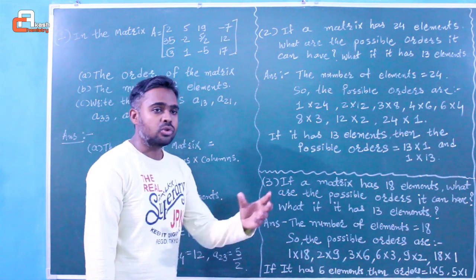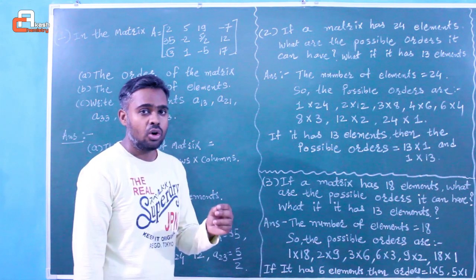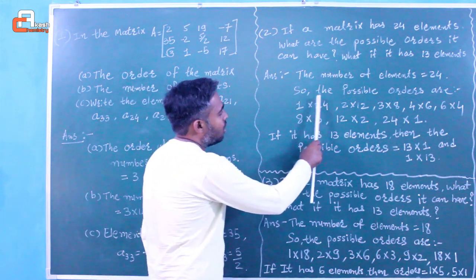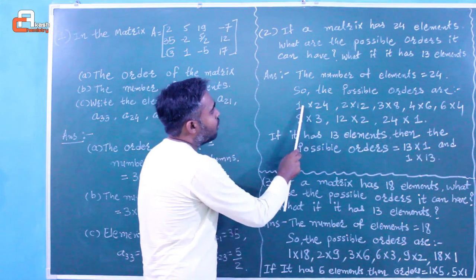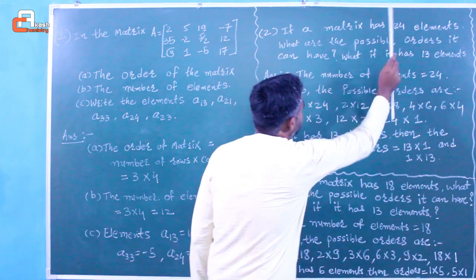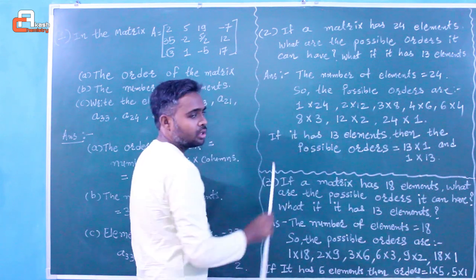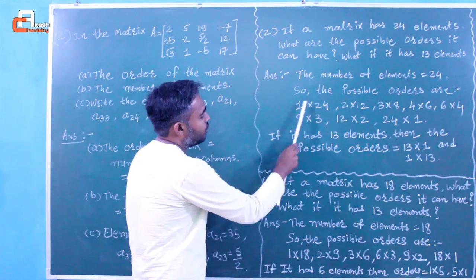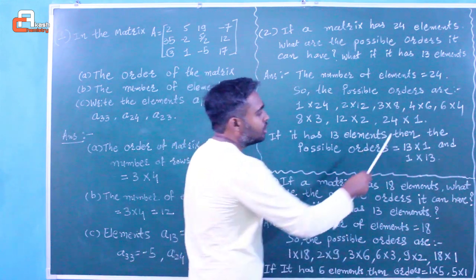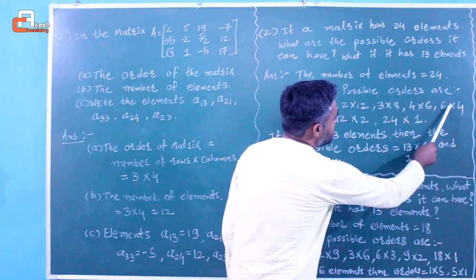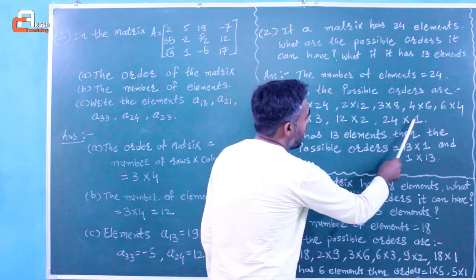The number of rows and columns are positive, so all possible orders whose product equals 24 are: 1 by 24, 2 by 12, 3 by 8, 4 by 6, 6 by 4, 8 by 3, 12 by 2, and 24 by 1.